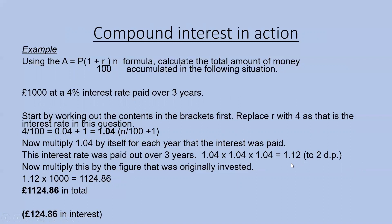That gives 1.12 to two decimal places. Now multiply that by £1,000, which was the amount originally invested. So 1.12 times 1,000 equals £1,124.86. In total, the amount of money built up over those three years would come to £1,124.86.